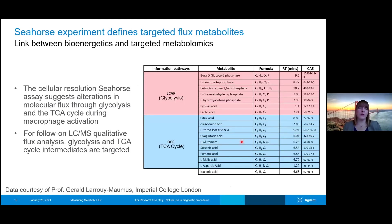Once we've looked at the cellular resolution and seen the changes in glycolysis and OCAR, we can then take this down to the molecular resolution and do our LC-MS qualitative flux analysis. In this particular case, we're focusing on glycolysis and the TCA cycle, and we can pull out all of the metabolites from both of these pathways. In this particular analysis, itaconic acid was also looked at.